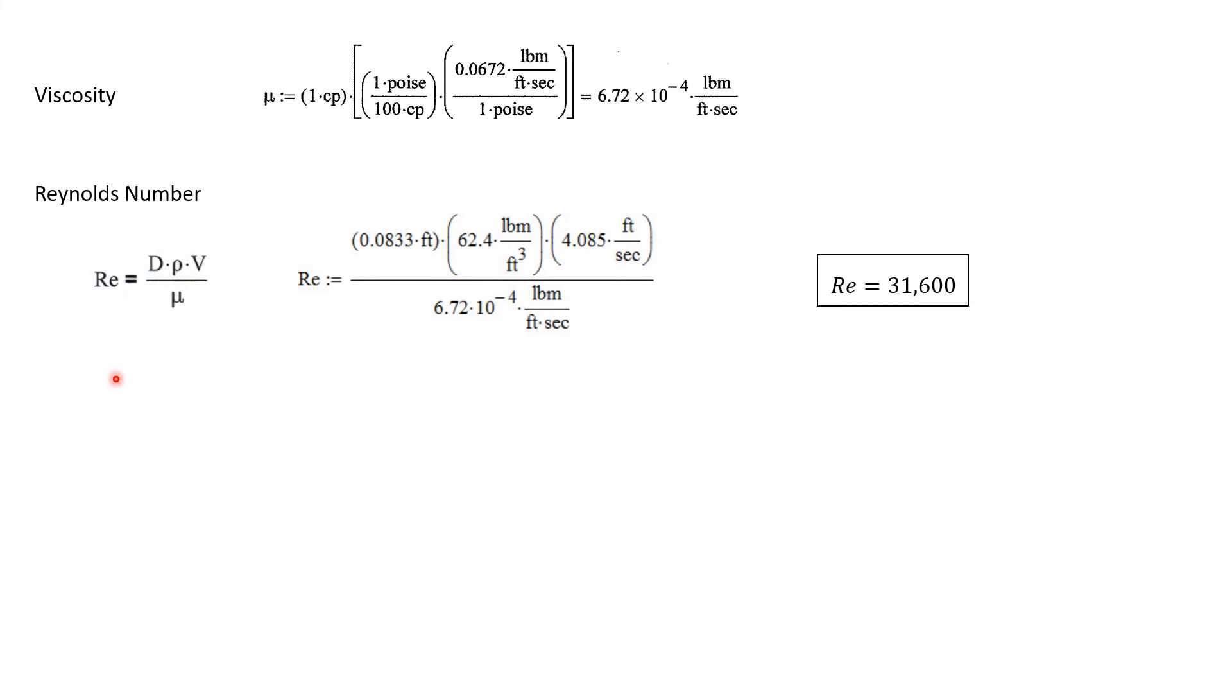So now we can calculate the Reynolds number. It's simply the diameter of 0.0833 feet times the density which was given in useful units from the beginning, times the velocity that we calculated in feet per second, and divided by the dynamic viscosity. Now all of the units are feet, pounds mass, and seconds, and they all cancel. And we get a Reynolds number of 31,600. There are no units on that.